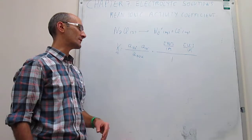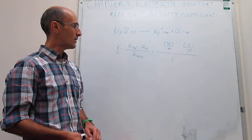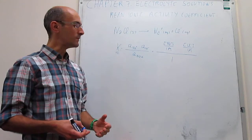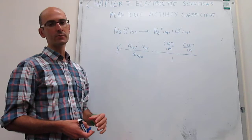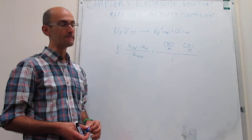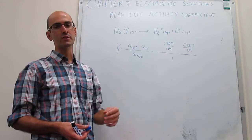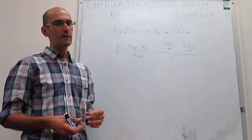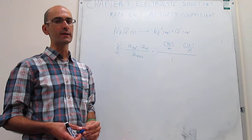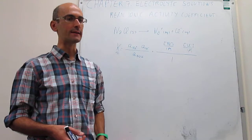In this case that solubility product would be very, very large. But here's the problem: in this case we're actually assuming that the solution behaves ideally and that we can map the activities into concentrations directly. But that's often not the case when you have ions, because there are significant deviations from ideality.